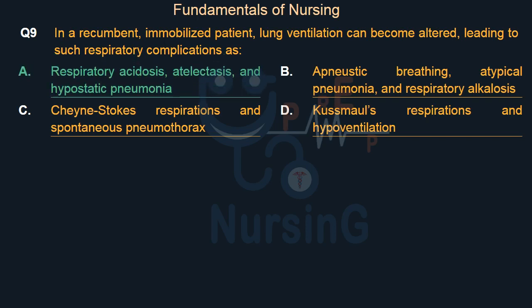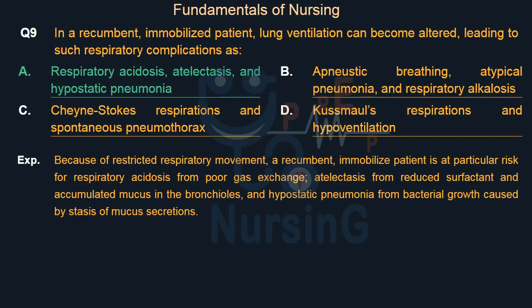Because of restricted respiratory movement, a recumbent, immobilized patient is at particular risk for respiratory acidosis from poor gas exchange, atelectasis from reduced surfactant and accumulated mucus in the bronchioles, and hypostatic pneumonia from bacterial growth caused by stasis of mucus secretions.